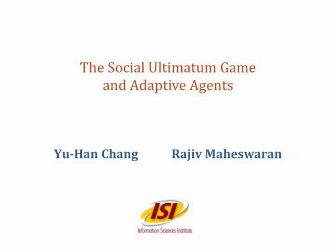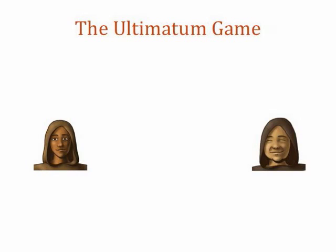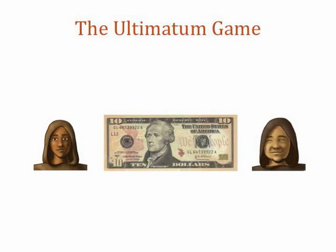This is the AMAS 2011 demo video for the Social Ultimatum Game and Adaptive Agents. The Ultimatum Game is an interaction which has been studied by many disciplines for almost 30 years. It is a two-agent one-shot interaction where traditionally $10 can potentially be split among the participants.